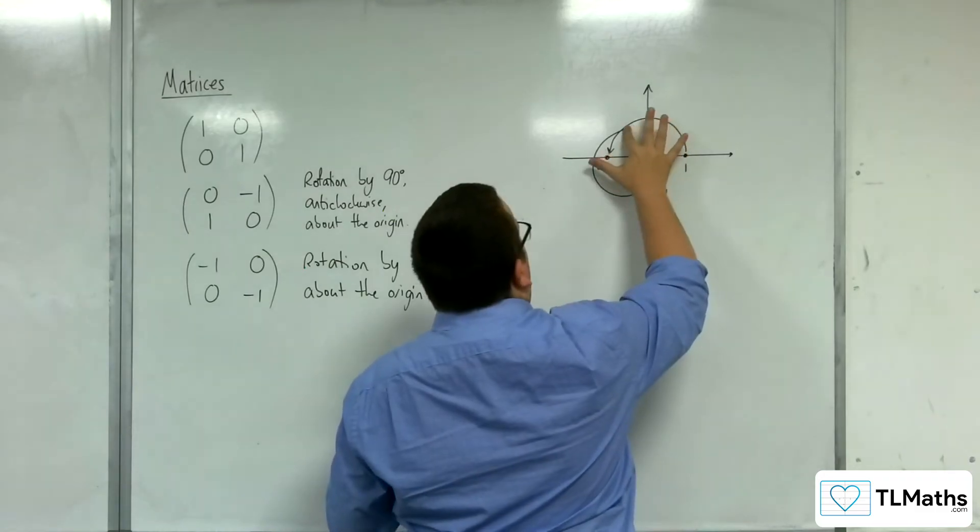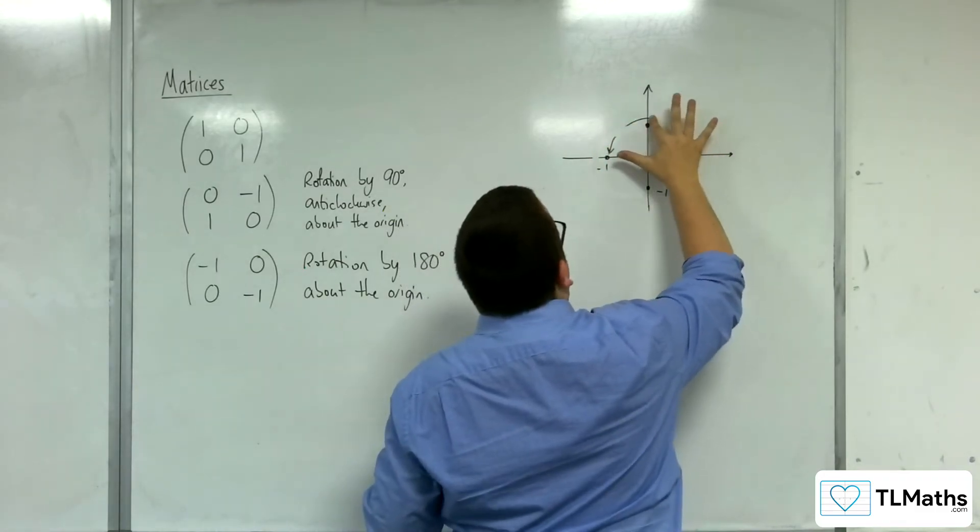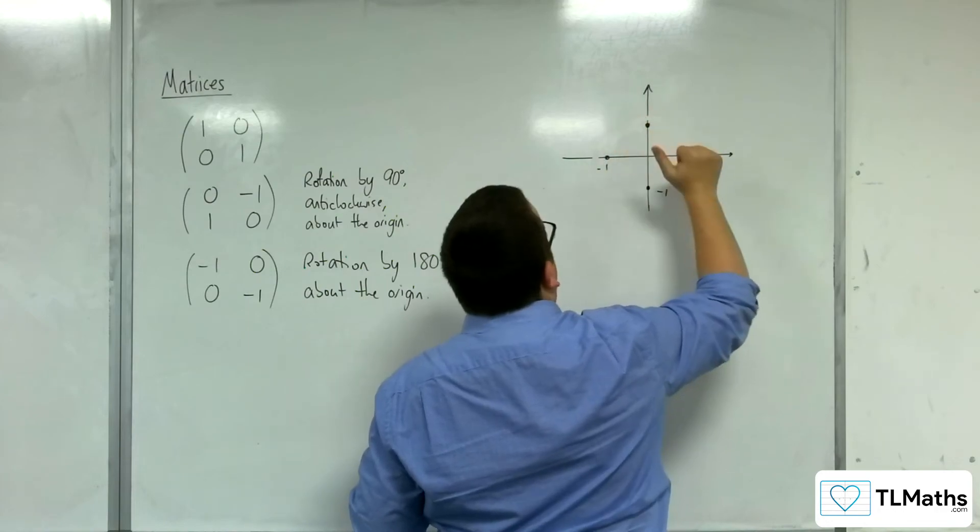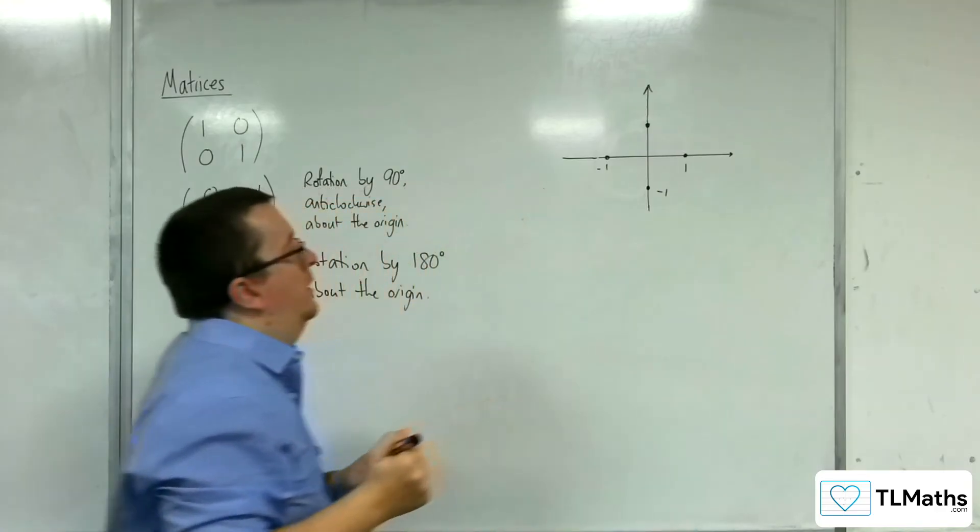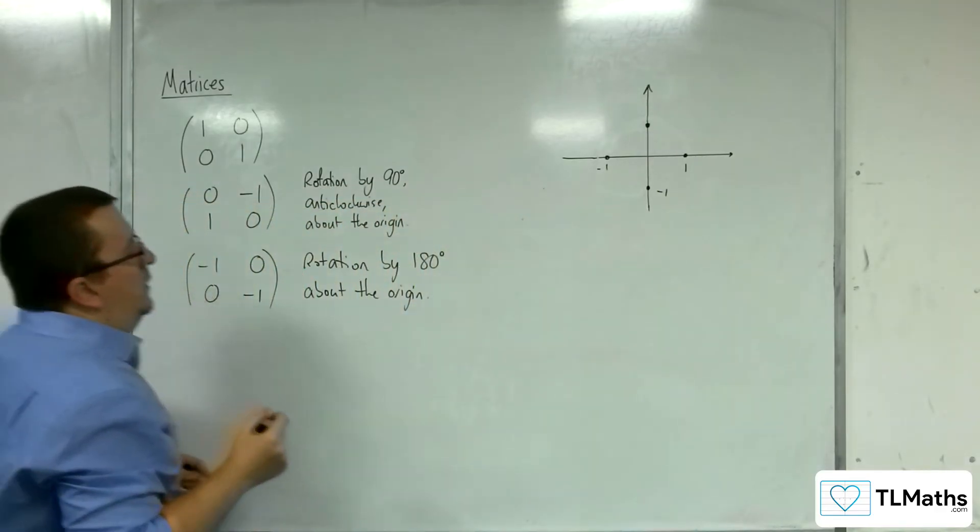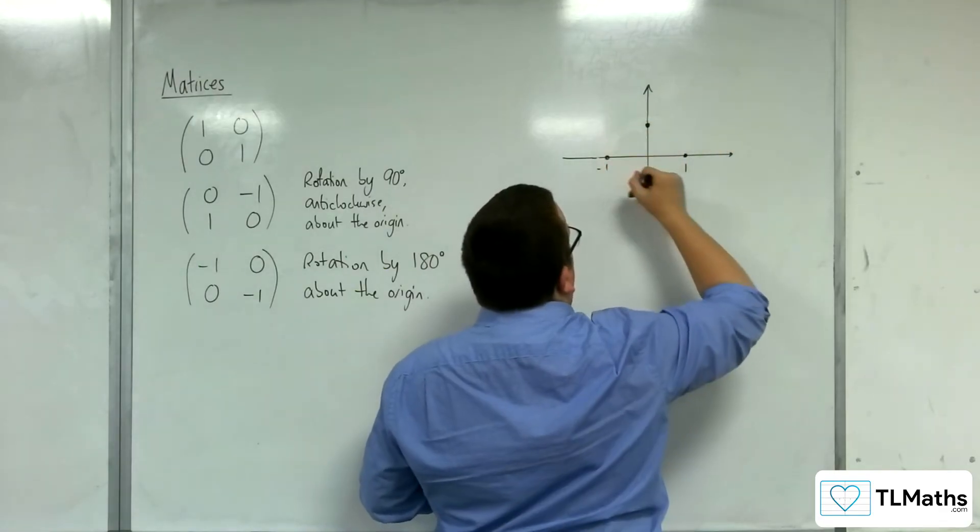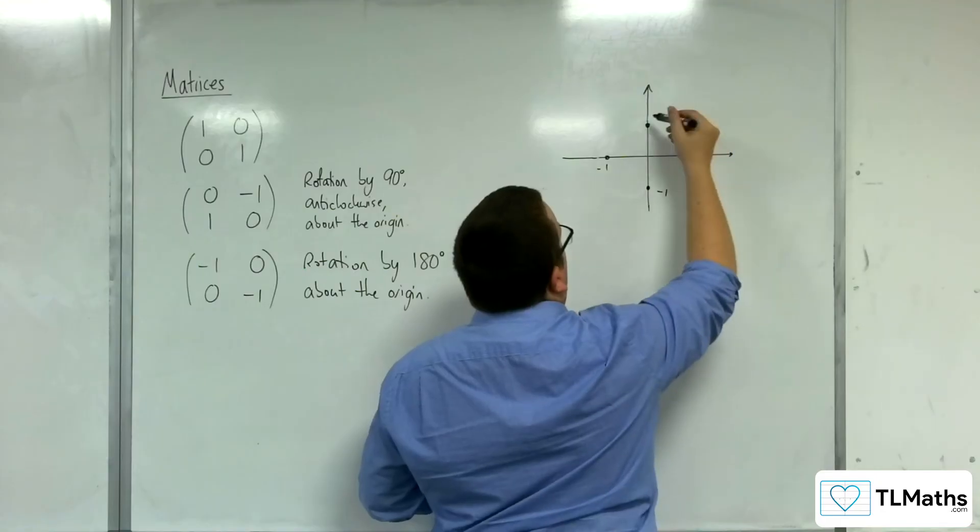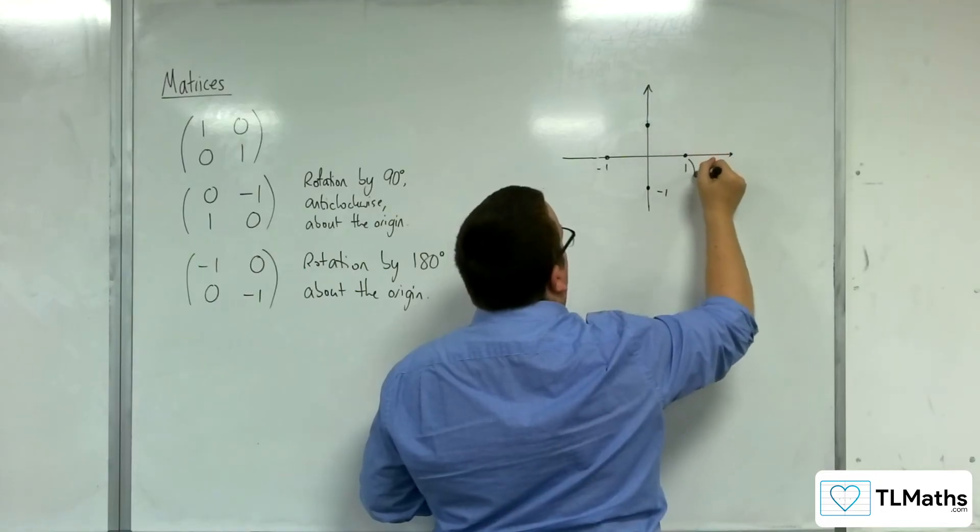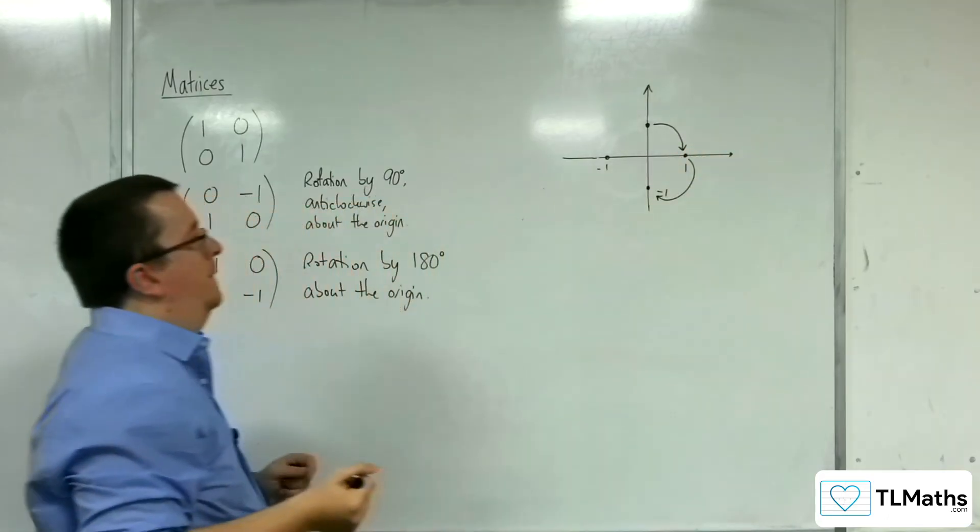So last but not least is a rotation by 270 degrees anticlockwise, which is equivalent to just going 90 degrees clockwise. So you can either think of this as going all the way around, or you can think of it as this point moving to this one, and this point moving to this one.